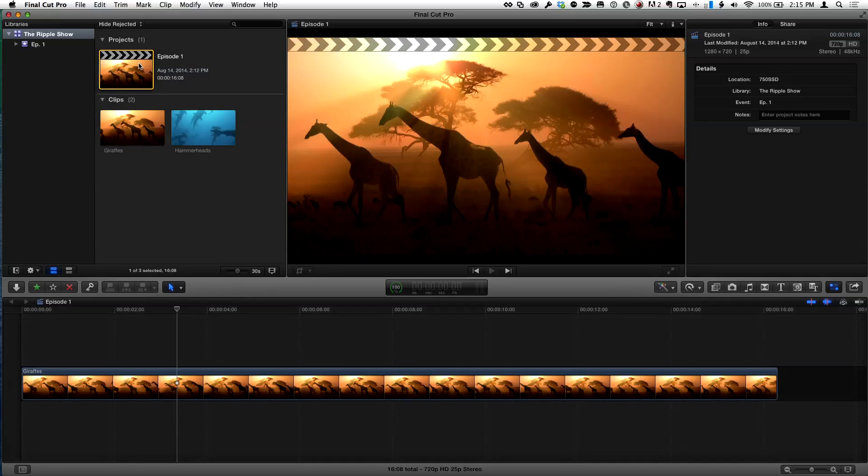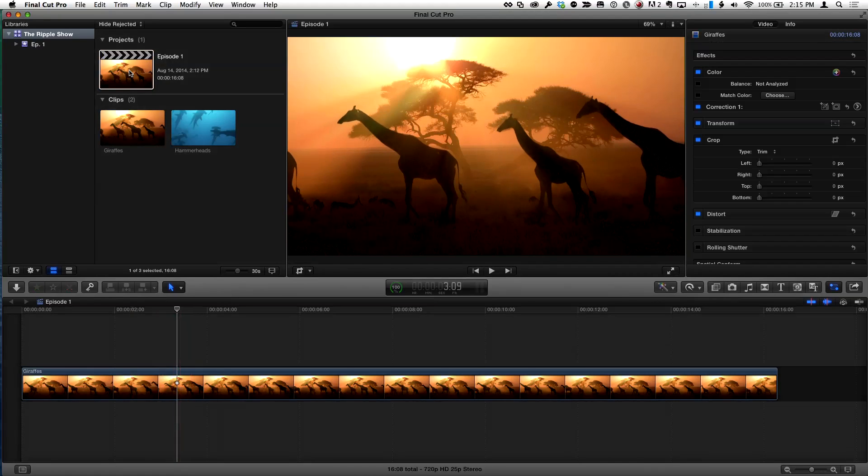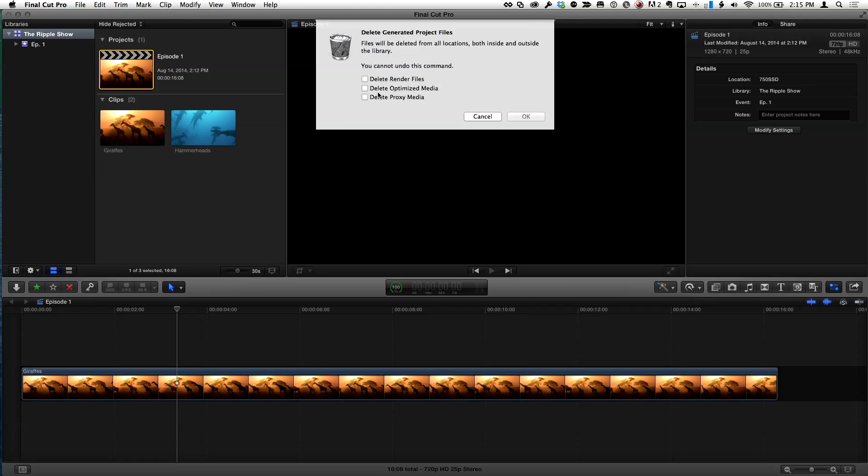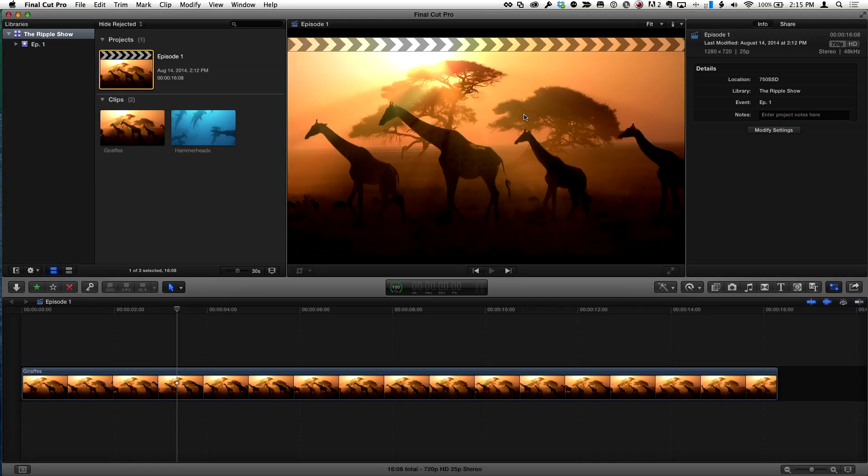If you just need the proxy media for a project, not the entire library, you don't want to have to regenerate all that proxy media. If all you're interested in is this particular edit you're working on, I'm going to go to the file menu and choose delete generated project files for just that project.